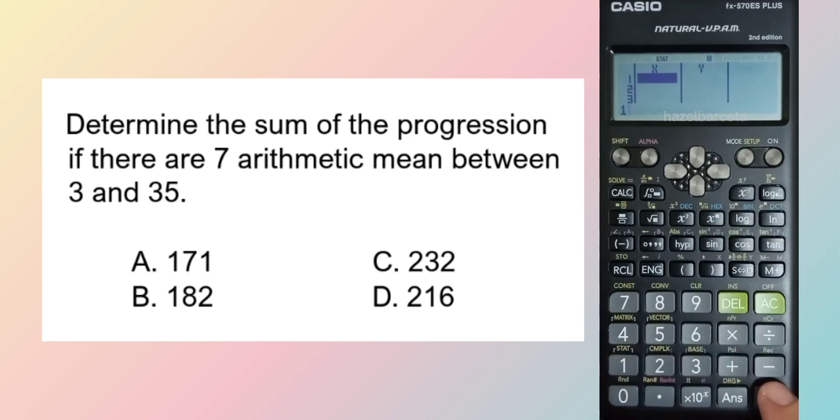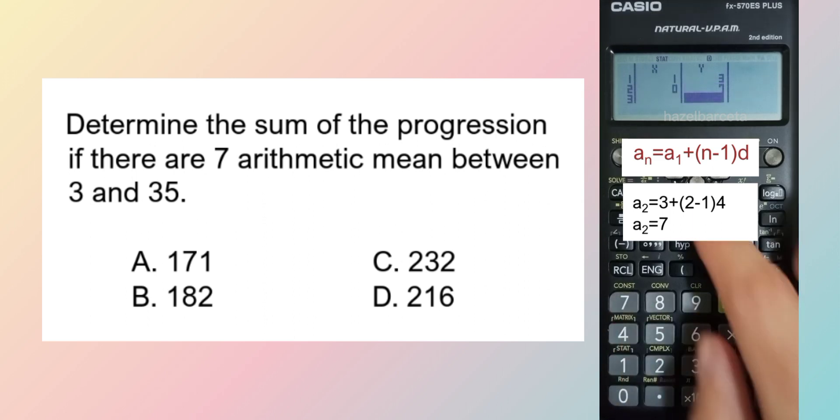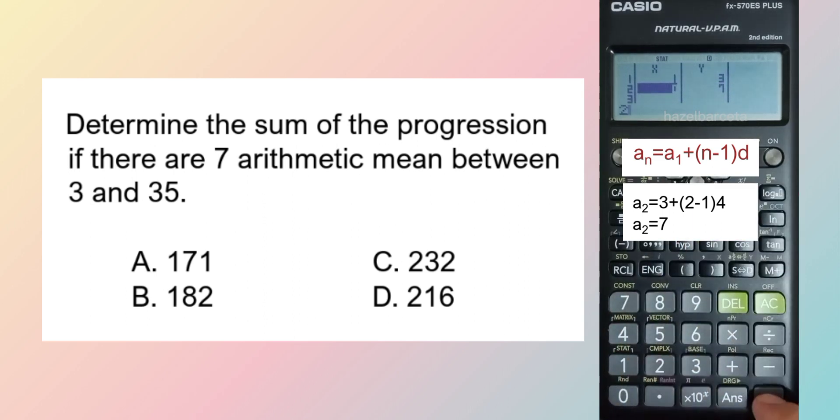Our first term is 3, given. Then plus 4, our common difference, gives 7 as our second term.